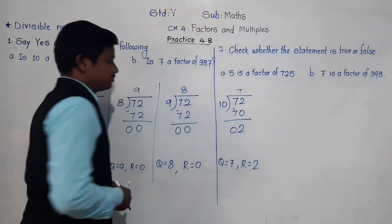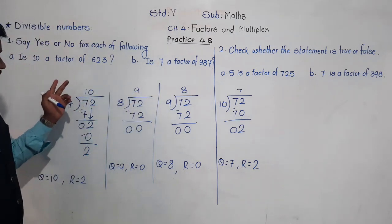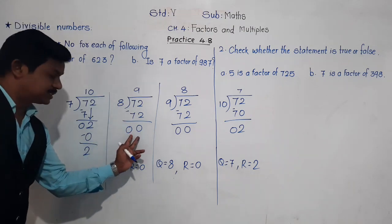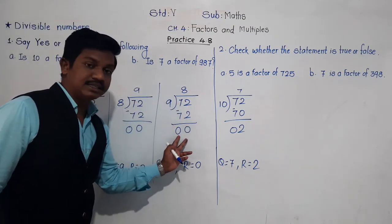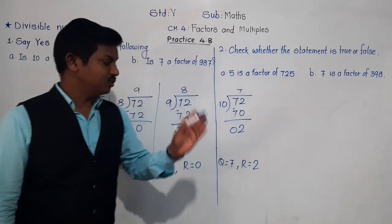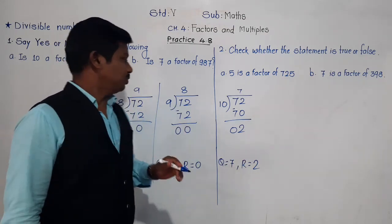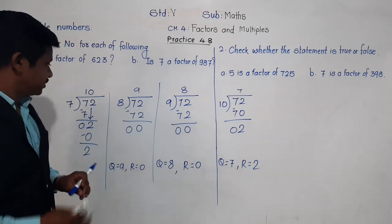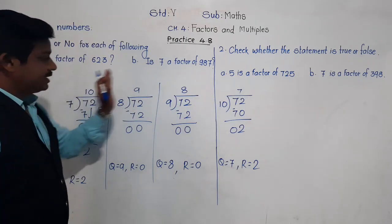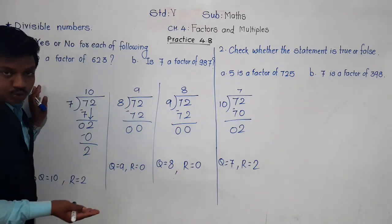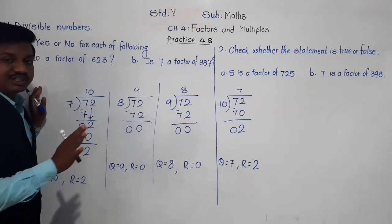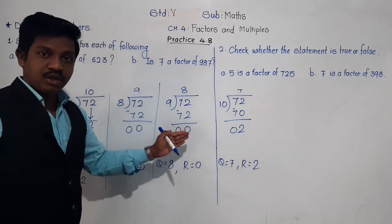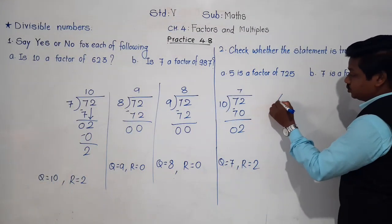Now from these four examples: when we divide 72 by 7, we got quotient 10 and remainder 2. When we divide 72 by 8, we got remainder 0. When we divide 72 by 9, we got remainder 0. When we divide 72 by 10, we got remainder 2 — not 0. So what can we conclude? In the first and last examples, the remainder is other than 0. In the second and third examples, the remainder is 0. Now from this, we can make two rules or two statements.